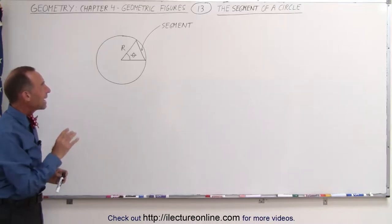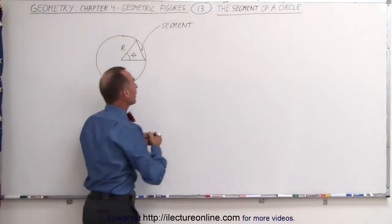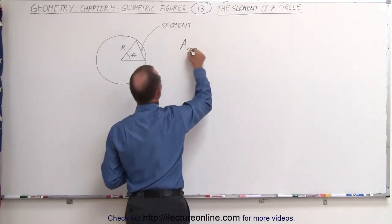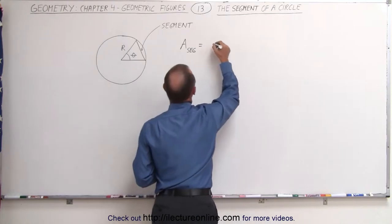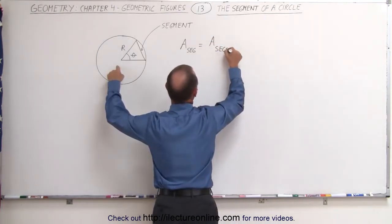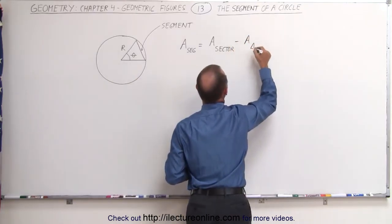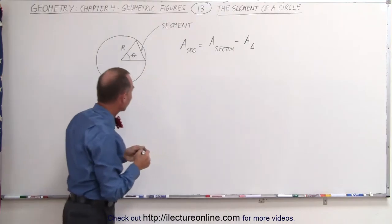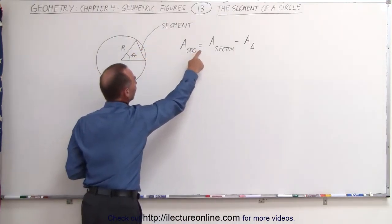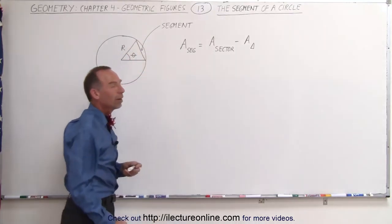What if we want to find the area of the segment of the circle? To do that we can say that the area of the segment is equal to the area of the sector minus the area of the triangle. So to find the area of the segment, I take the area of the entire sector and subtract the area of the triangle.